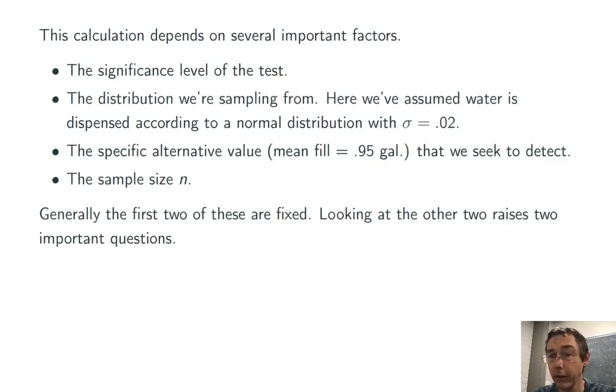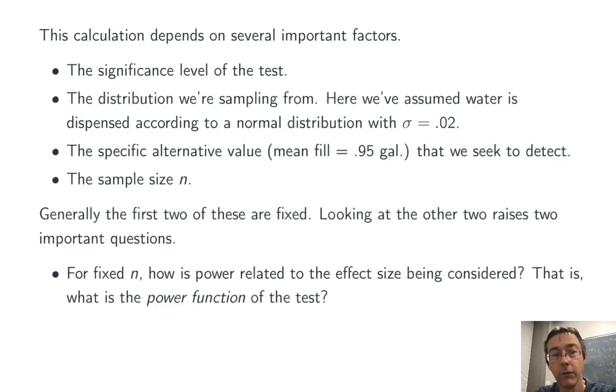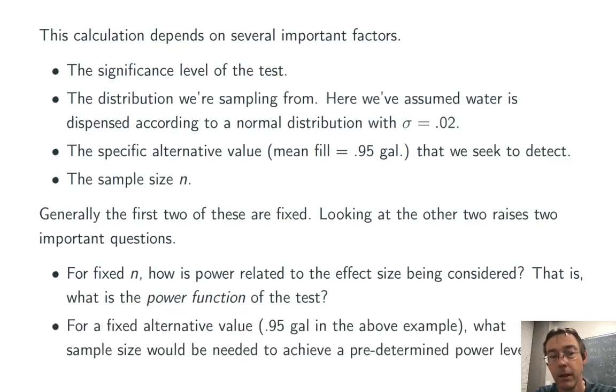And there's a pair of questions related to one another, but distinct, that all of this raises. First of all, what if we're not just interested in a mean fill of 0.95 gallons? What if we want to take into account that the machine might actually be dispensing 0.9 gallons or 0.96 gallons? How does that impact the result that we get? What kind of power level would be predicted under those different circumstances? In other words, what is the power function of this test? Power as a function of that alternative value that we are plugging in.